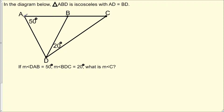Triangle ABD is isosceles with AD equal to BD. If the measure of angle DAB equals 50 degrees, and the measure of angle BDC equals 20 degrees, what is the measure of angle C? The goal is to find the measure of this angle.